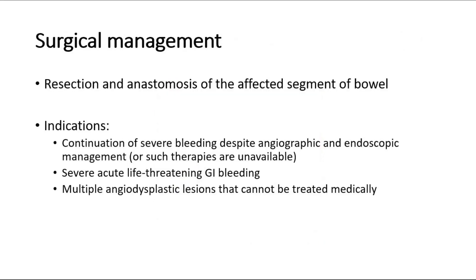In a minority of cases, surgical intervention is the only option, whereby a resection and anastomosis of the affected segment of bowel is necessary to limit bleeding. Indications for bowel resection in patients with angiodysplasia are: continuation of severe bleeding despite angiographic and endoscopic management, severe acute life-threatening GI bleeding, or multiple angiodysplastic lesions that cannot be treated medically.